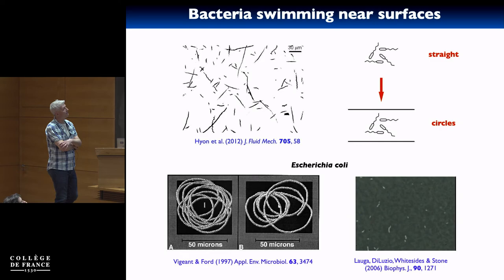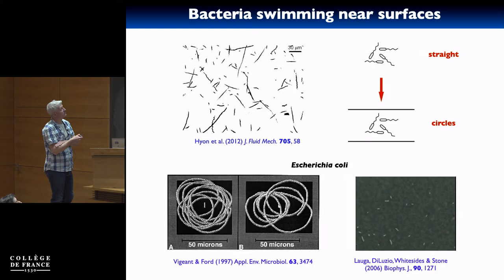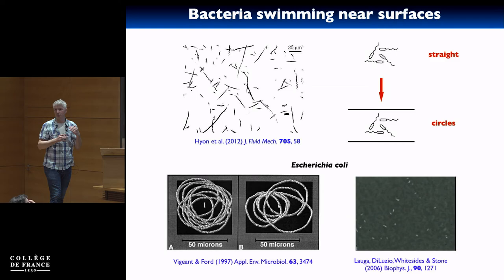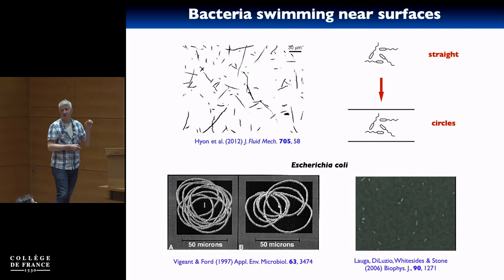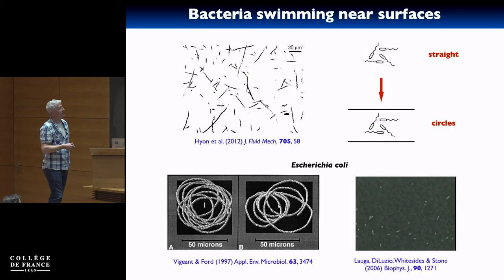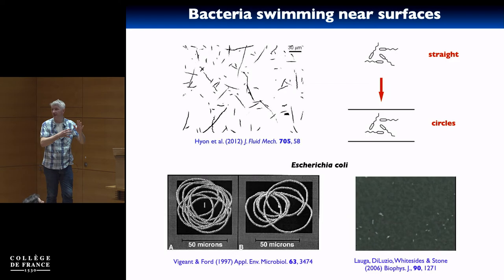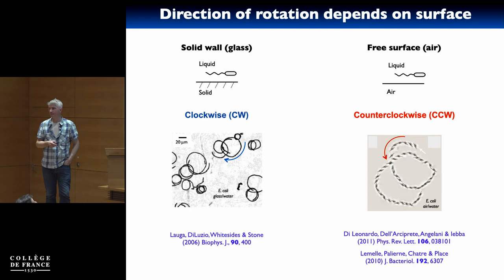Those were smooth-swimming bacteria — genetically modified strains that no longer do run-and-tumble, they just swim and diffuse. This makes them very useful for testing theories that don't include random tumbling. The strain name is HCB (for Howard Berg), and many biophysics papers with E. coli use that strain so you can study phenomena without worrying about tumbles.